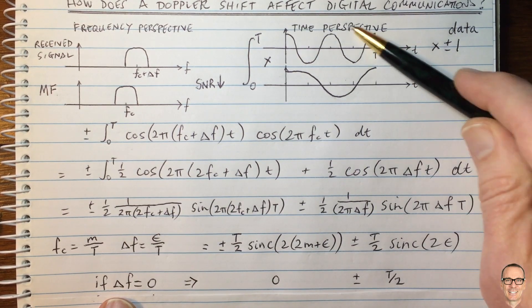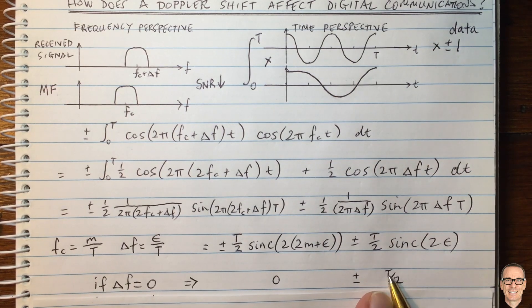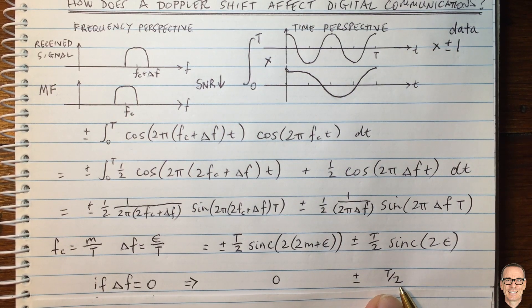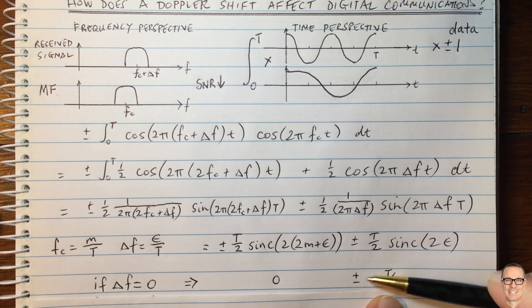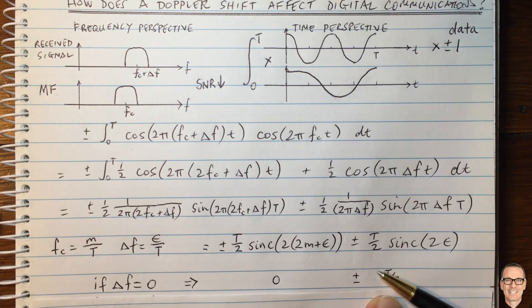So when there's no Doppler shift, you're going to be getting output from your match filter, you will be getting plus or minus capital T divided by two, where the plus and minus tells you the data. And this defines for us our signal to noise ratio. So this is the power from the signal.